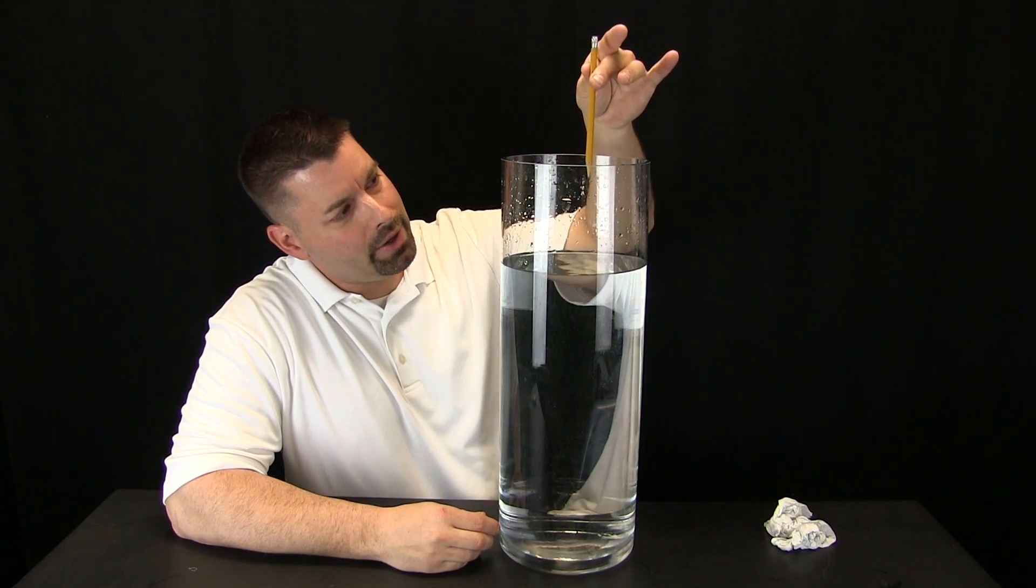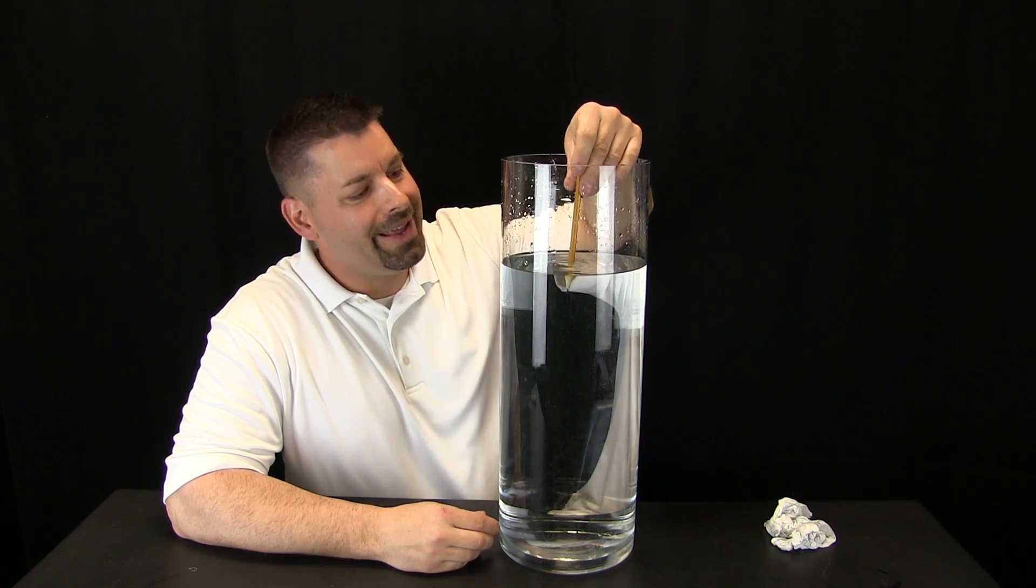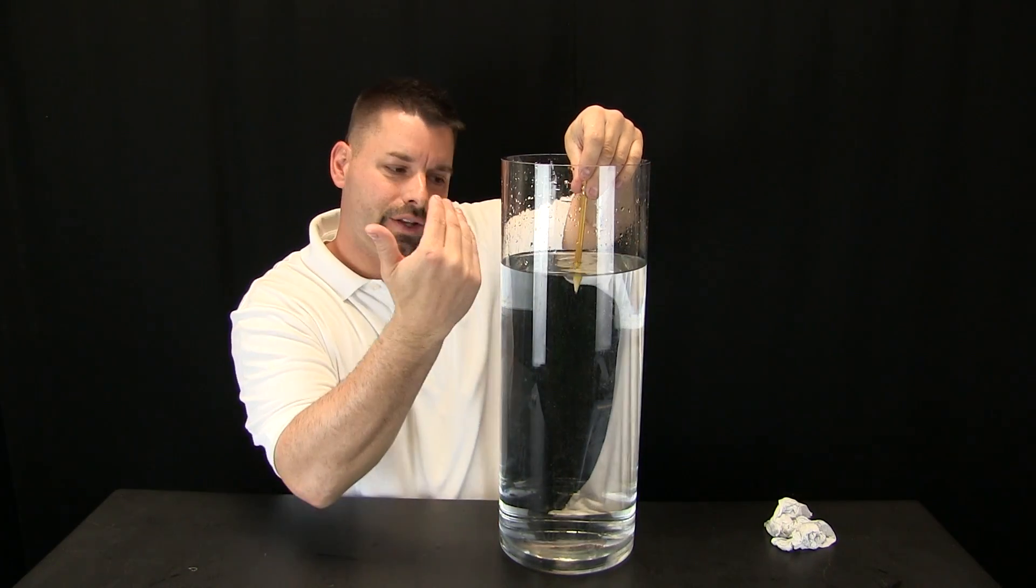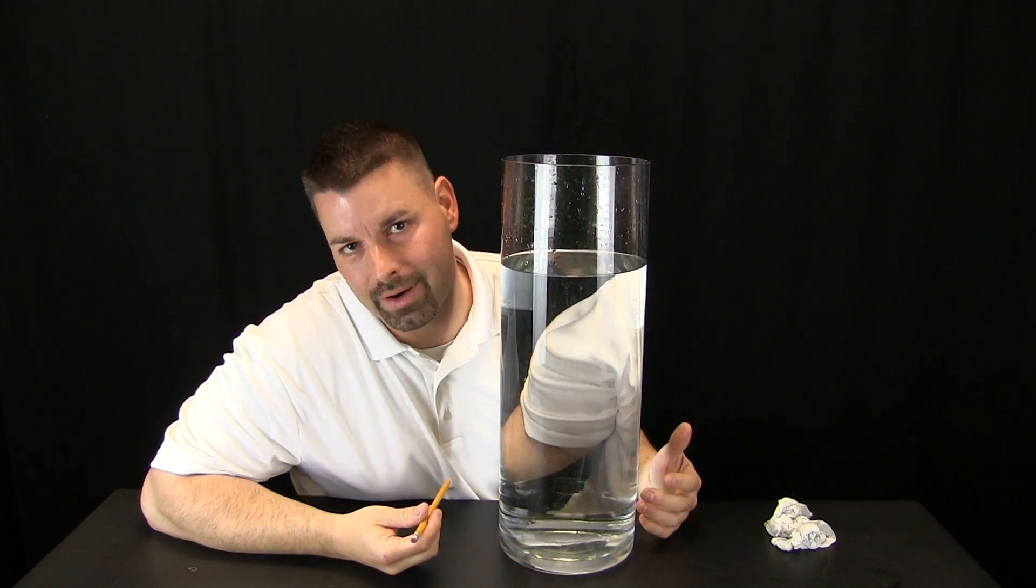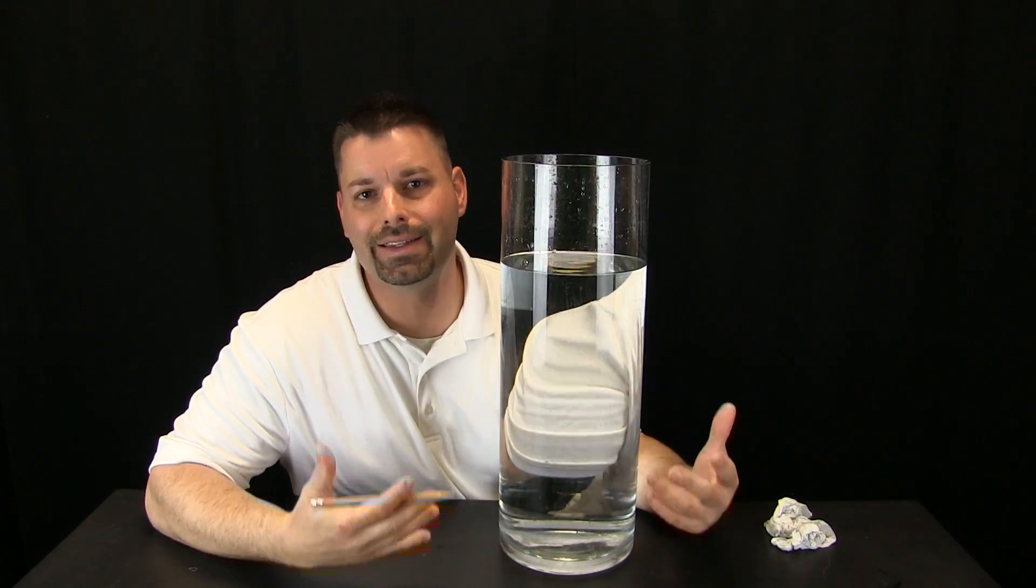So as the pencil fell through the air it fell straight. And when it hit the water it slowed down. And when it slowed down, the path of the pencil bent in the water. That is exactly what light does.